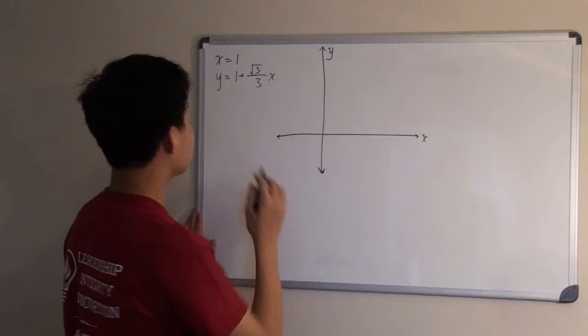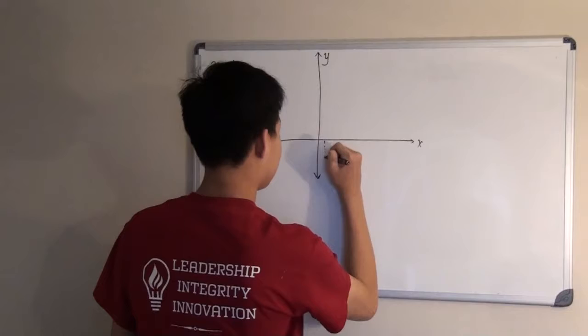Now, the first line is x equals 1. So that would be right here. Let's say right here.